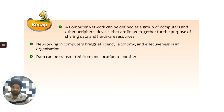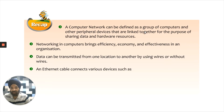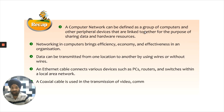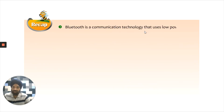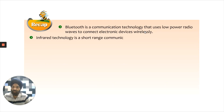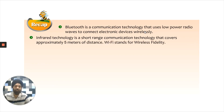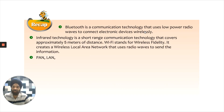Data can be transmitted from one location to another using wires or without wires. An Ethernet cable connects various devices such as PCs, routers, and switches within a local area network. A coaxial cable is used in the transmission of video and audio communications. Fiber optics is a popular technology with a large capacity to transfer data at very high speed. Bluetooth is a communication technology that uses low-power radio waves to connect electronic devices wirelessly. Infrared technology is a short-range communication technology that covers approximately 5 meters. Wi-Fi stands for wireless fidelity and creates a wireless local area network using radio waves.